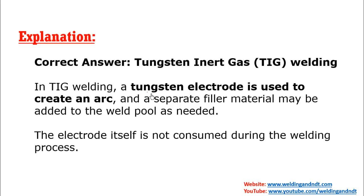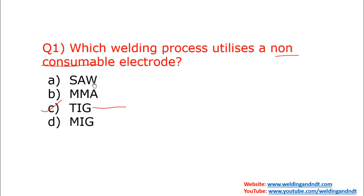In TIG welding, the tungsten electrode is used to create an arc, and this arc produces the necessary heat for welding. If you need to fill metal, additional filler metal is required for filling the gap. In other processes like submerged arc welding, manual metal arc welding, and MIG welding, the electrode itself acts as a filler metal — it generates the arc and fills the material, so the electrodes are consumed.